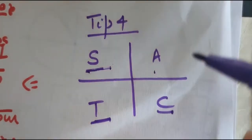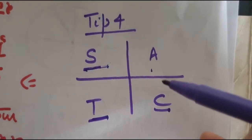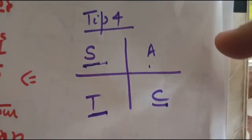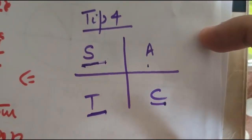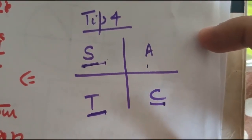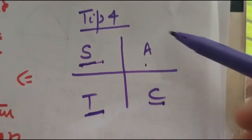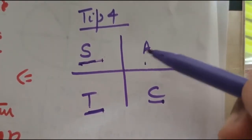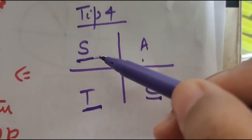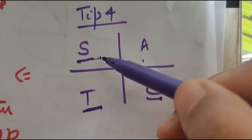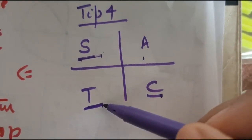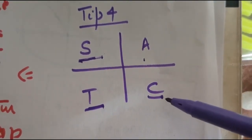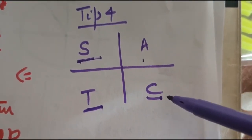Tip number four: if we divide the graph into four quadrants, in the first quadrant all trigonometric ratios are positive. In the second quadrant, sine is positive. In the third quadrant, tangent is positive. In the fourth quadrant, cosine is positive.